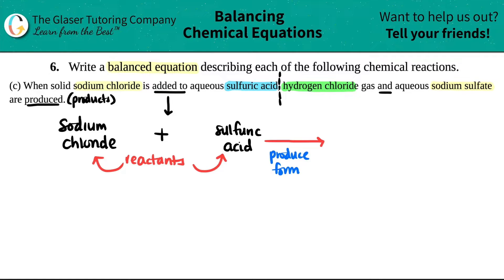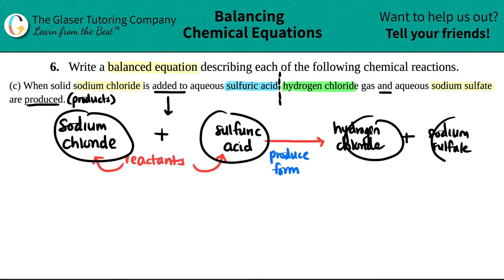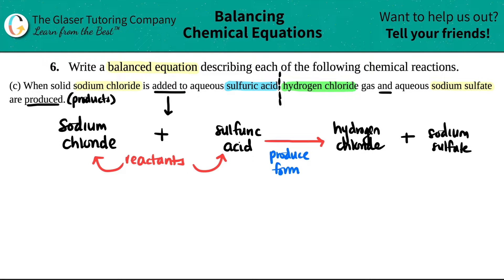This symbol just means to produce, or to form — any word like 'make' — it all means the same thing. And now, what is it making? It's making hydrogen chloride and sodium sulfate. We have our blueprint. I have now everything set in stone. I just need to now put in the chemical formulas.